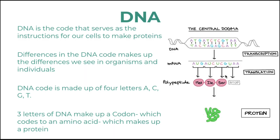DNA is the code that serves as the instruction for all our cells to make proteins. On the right side of the slide is the central dogma. It shows the process in which all cells use DNA to create new molecules of proteins. Proteins do all the jobs of the cells — they're kind of like the worker bees of the cells — so the message to build them must be accurate.